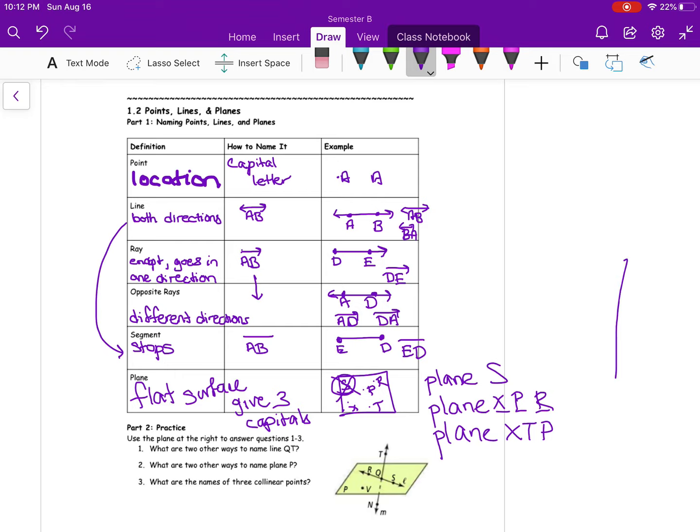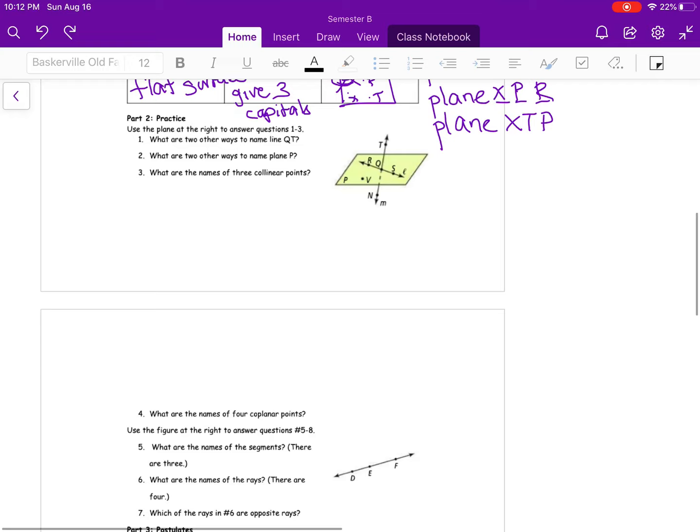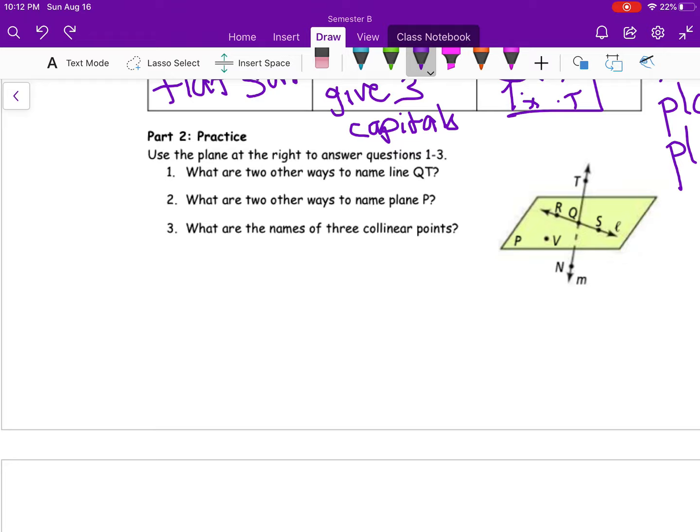All right, for 1.2b, we're just going to go through and do some practice examples of what this will look like. So it says, use the plane at the right to answer questions one through three. What are two other ways to name line QT?